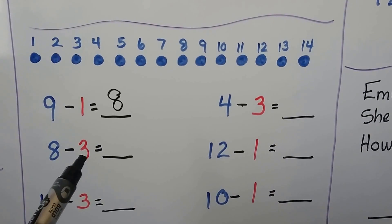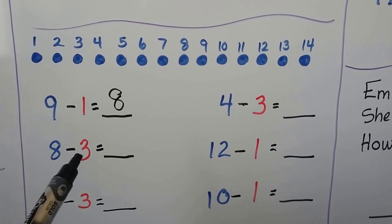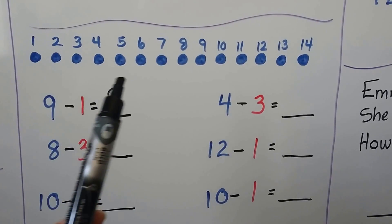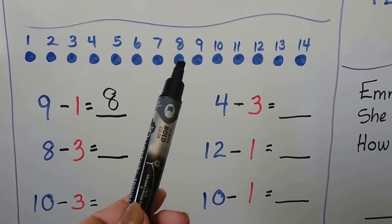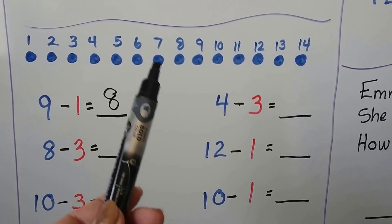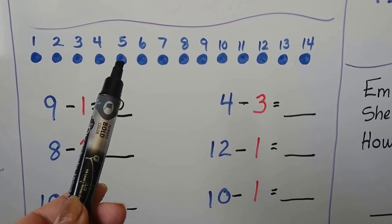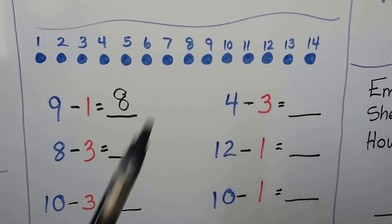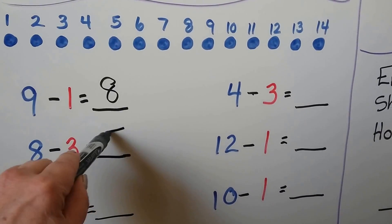8 minus 3. We start at the 8 and count back 3. There's the 8. Let's count back 3: 1, 2, 3. That brings us to 5. 8 minus 3 is equal to 5.